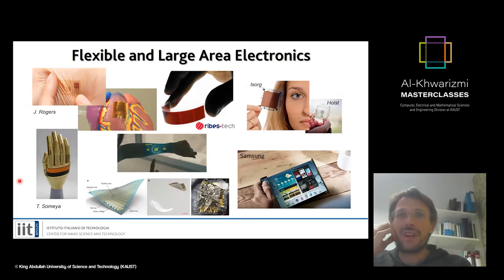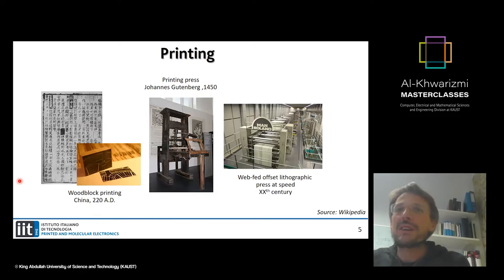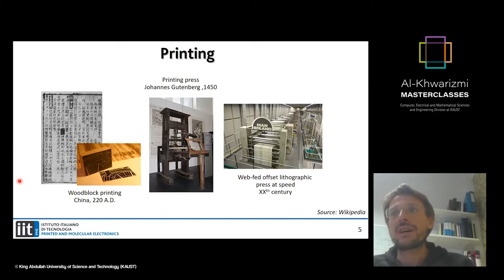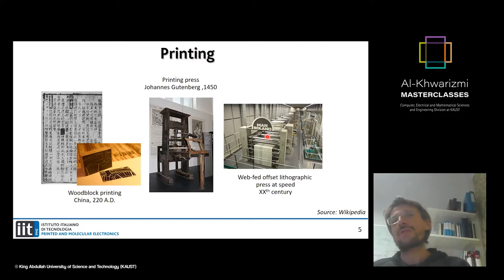The context of our work is flexible and large-area electronics — fabrication of electronics in form factors and shapes that are non-conventional. There are many technologies for large-area electronics, but our approach is printing. Printing, as you've heard, is a common way to reproduce information in high volumes at low cost, going back to ancient Chinese woodblock printing and Gutenberg's press — 500 to 600 years of developed technology that we leverage for electronics.